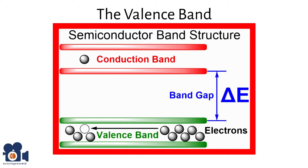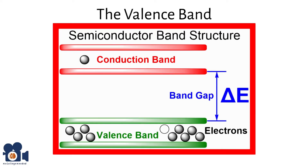In the valence band, the movement of electrons filling these holes creates the appearance of hole movement in the opposite direction. This movement of holes can also contribute to electrical current. Although electrons themselves do not flow freely in the valence band, the movement of holes — which is the result of electron movements — contributes to the electrical current.